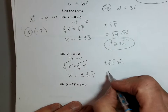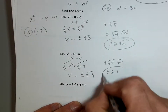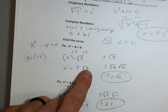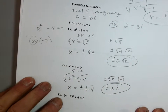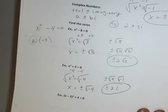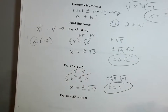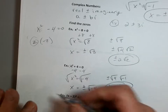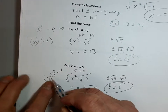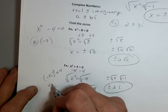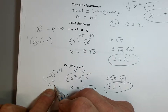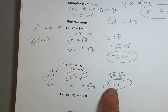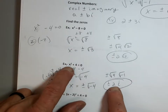If you plug in negative 2i: negative 2i squared plus 4 gives positive 4i squared, and i squared is negative 1, so 4 times negative 1 plus 4 equals 0. Both answers work. Example 3: solve (x minus 2) squared plus 4 equals 0. Subtract 4: (x minus 2) squared equals negative 4. Take the square root — the square cancels — giving x minus 2 equals plus or minus 2i. Add 2 to both sides: x equals 2 plus or minus 2i. You can't combine the real and imaginary parts.